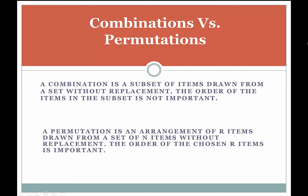In this video we're discussing the difference between combinations and permutations. The reason we're taking time out to talk about that is that they're often confused with one another. Let's start with the basic definitions. A combination is a subset of items drawn from a set without replacement. The order of the items in the subset is not important.